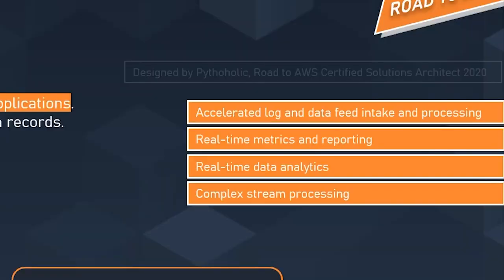When asking what you can do with Kinesis Data Streams, there are a few key points. First is accelerated log data feed intake and processing — with KDS, producers can push data directly into streams, and even if there is an application server failure, the data isn't lost. Second is real-time metrics and reporting, where you can use data collected into Kinesis Data Streams for simple data analysis and reporting in real time. Third is real-time data analytics — you can run multiple Kinesis Data Stream applications in parallel to make real-time processing and analytics much faster.